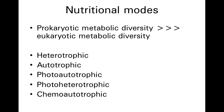Nutritional modes — how do bacteria eat? As it turns out, the metabolic diversity of prokaryotes is far greater than the metabolic diversity of eukaryotes. Basically, prokaryotes can eat many more different kinds of nutrient sources than eukaryotes — not just in terms of food, but they can use inorganic substances more efficiently than eukaryotes.